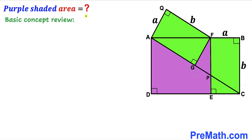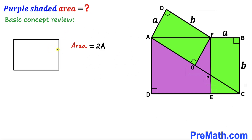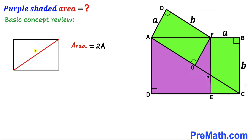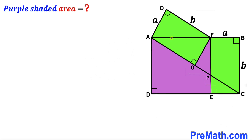Let's go ahead and get started. Before we proceed any further, let me go over the basic concepts. Let's focus on this rectangle and assume the area of this rectangle is two times uppercase A. When we draw the diagonal, it divides the area into two equal parts. If the total area is 2A, then each triangle has area A. Likewise, if we draw the diagonal the other way around, each triangle has area A as well.